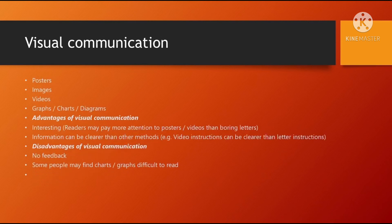Visual communication includes posters, images, videos, graphs, charts, and diagrams. Advantages include that they are interesting, so readers may pay more attention than to boring letters. Information can also be clearer than other methods — for example, video instructions can be clearer than written instructions. Disadvantages include no feedback in this method, and some people may find charts or graphs difficult to read.